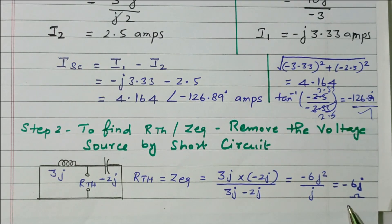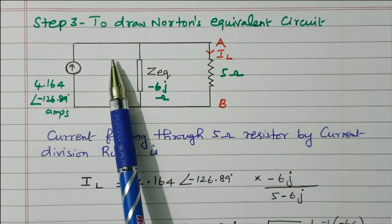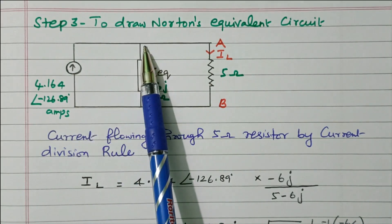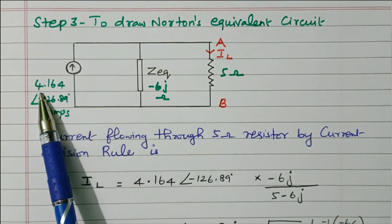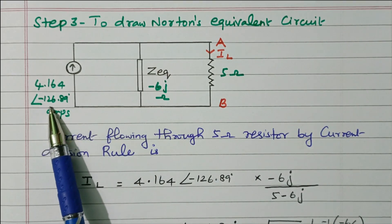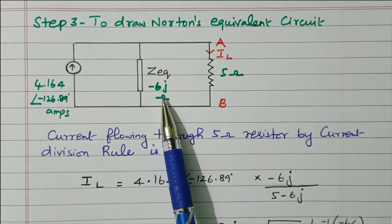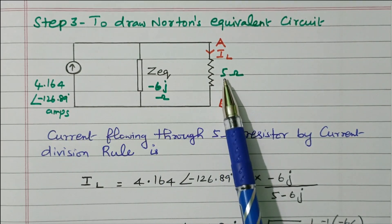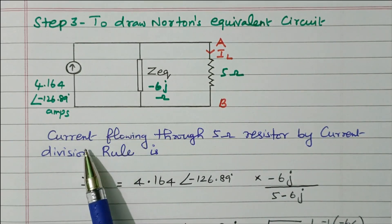We have now calculated the short circuit current and the Thevenin equivalent. Step three is to draw the Norton equivalent circuit. The equivalent circuit consists of the short circuit current source of 4.164∠−126.89° amperes, in parallel with Z-Thevenin of −j6 ohm, connected to the load terminal AB with 5 ohm load impedance. Our aim is to find the current through this 5 ohm resistor.